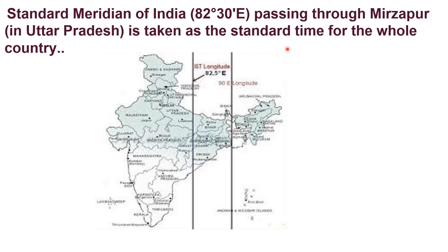This is a picture of the standard meridian. You have all heard the terminology IST - Indian Standard Time. From Gujarat in the west to Arunachal Pradesh in the east, there is a time lag. Though if you call someone in Gujarat and Arunachal Pradesh and ask the time they may say the same time, the longitudinal extent influences the duration of day and night.